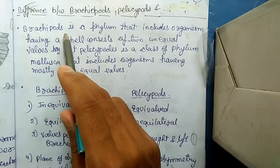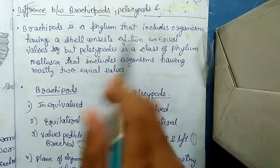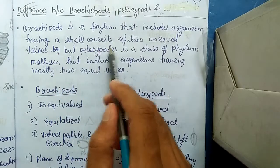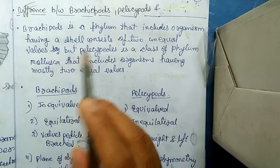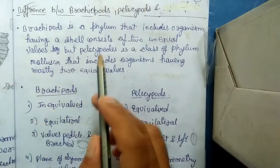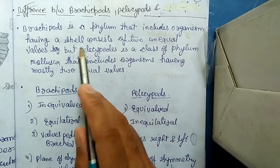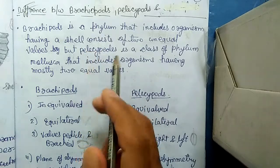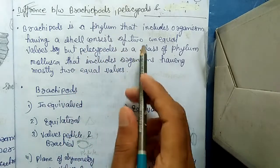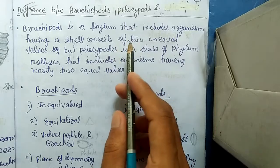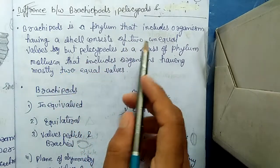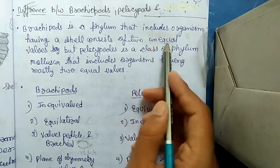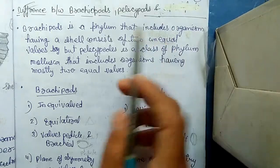Brachiopoda is a phylum that includes organisms having a shell consisting of two unequal valves. Organisms that belong to the phylum Brachiopoda consist of a shell, and these shells have two valves — but those two valves are unequal in Brachiopoda.